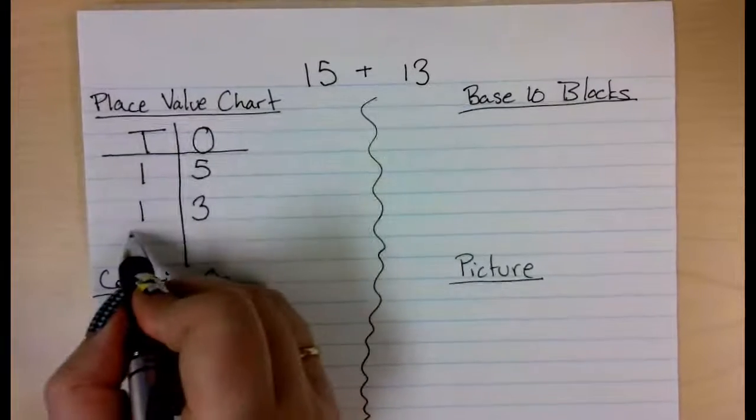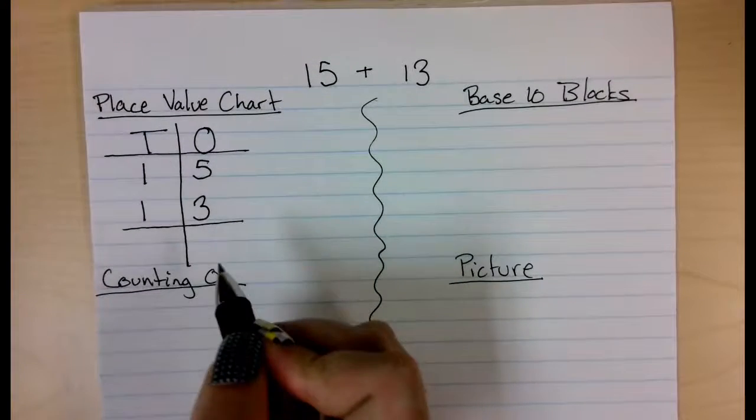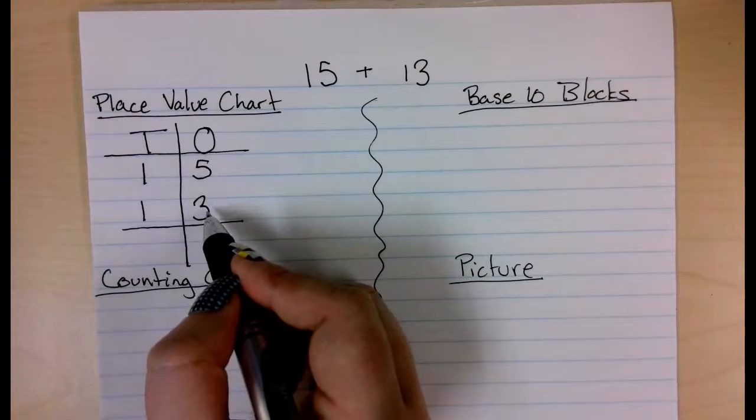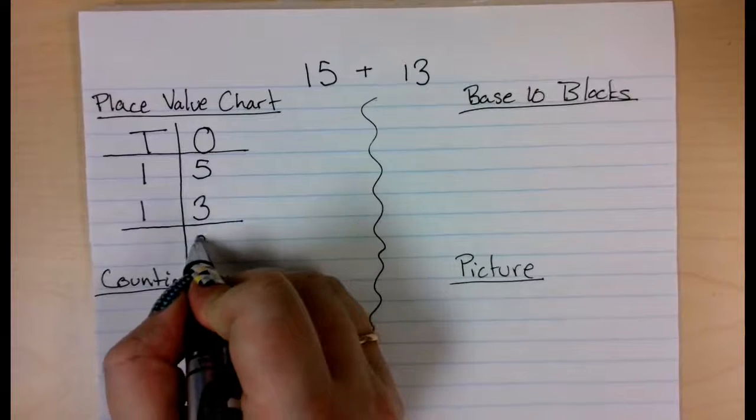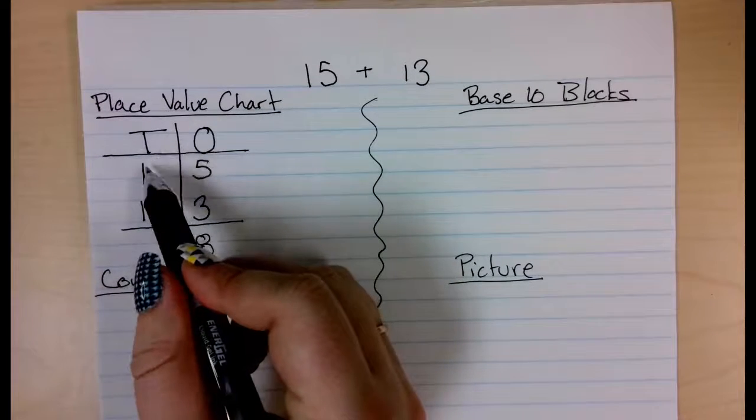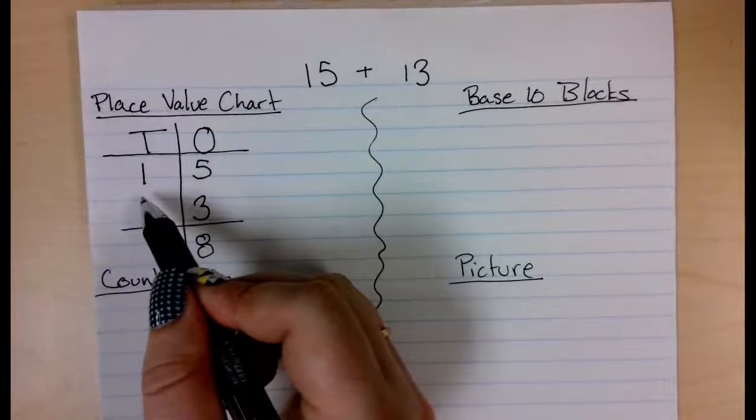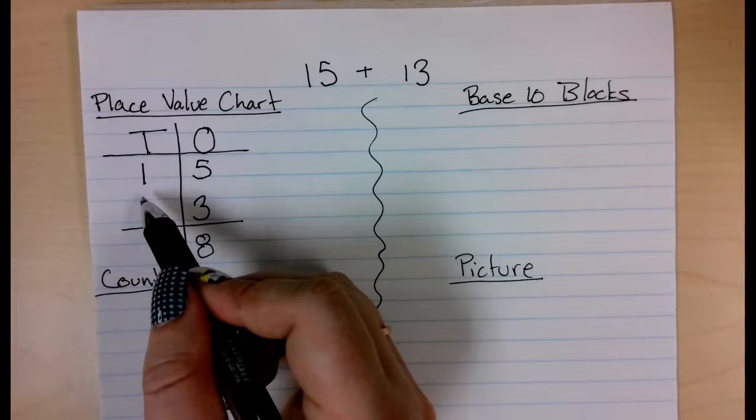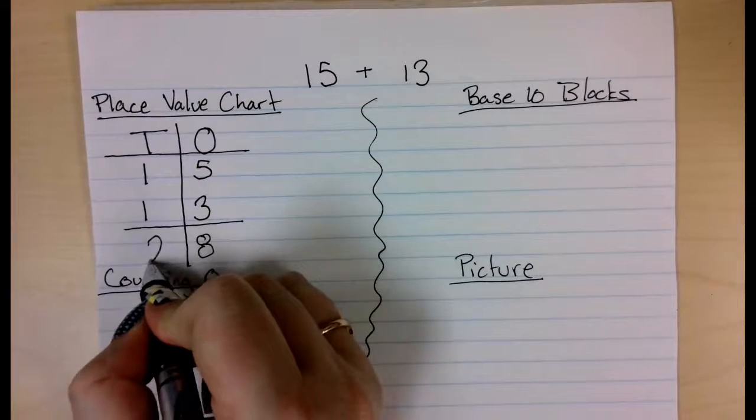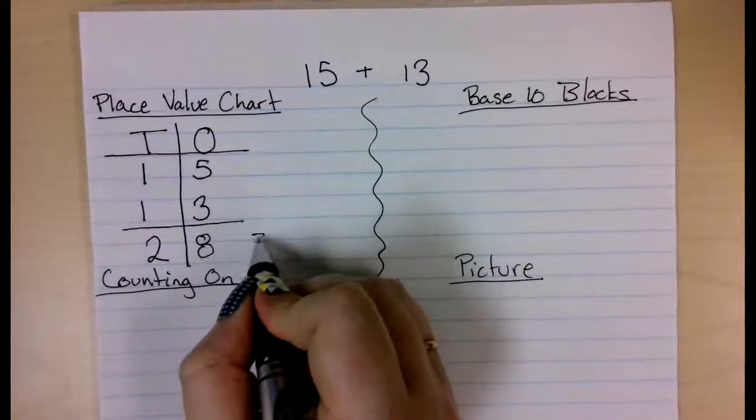And then I can add the places. So if I add my ones together, I have 5 plus 3, and that is 8. If I add my tens, I have 10 plus 10, that's 20. Or the way it looks on this method is 1 plus 1 is 2, and then that gives me 28.